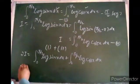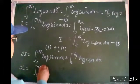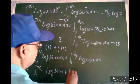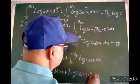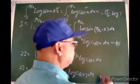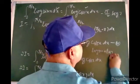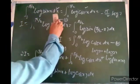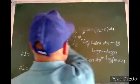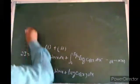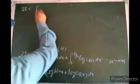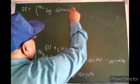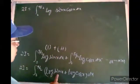We can write 2I as the integral from 0 to π/2 of log(sin x) plus log(cos x) dx. Applying the logarithm rule — log m plus log n equals log(m times n) — we get 2I equals from 0 to π/2, log(sin x · cos x) dx.